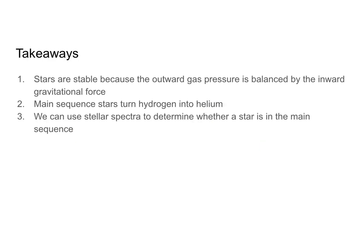So takeaways. First, stars are stable because the outward gas pressure is balanced by the inward gravitational force. Make sure you know outward gas, inward gravity. Main sequence stars turn hydrogen to helium and are mostly composed of hydrogen. And we can use stellar spectra to determine whether a star is in the main sequence. So you can use stellar spectra to figure out, is a star mostly made up of hydrogen? So there you go. You now know all about the inner lives of stars. Best of luck and happy learning.